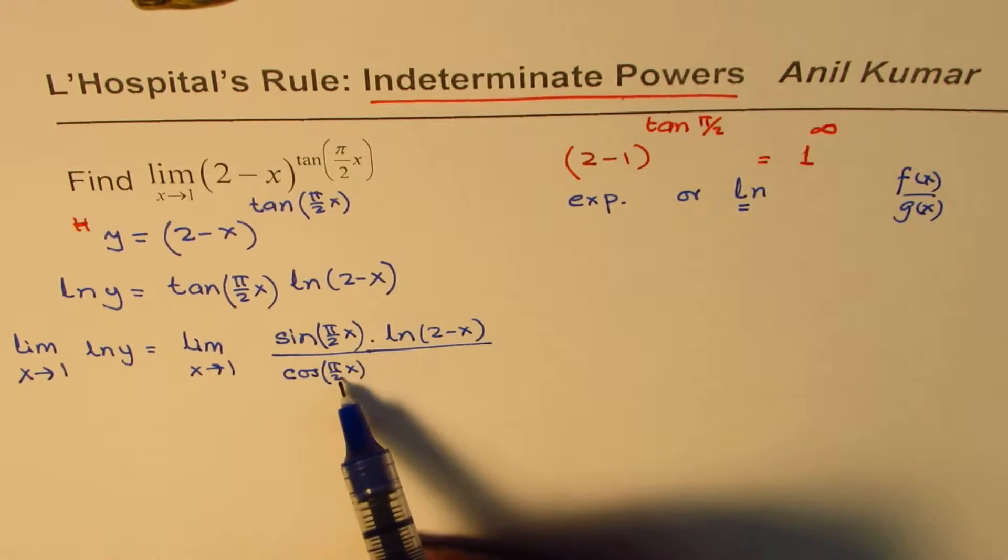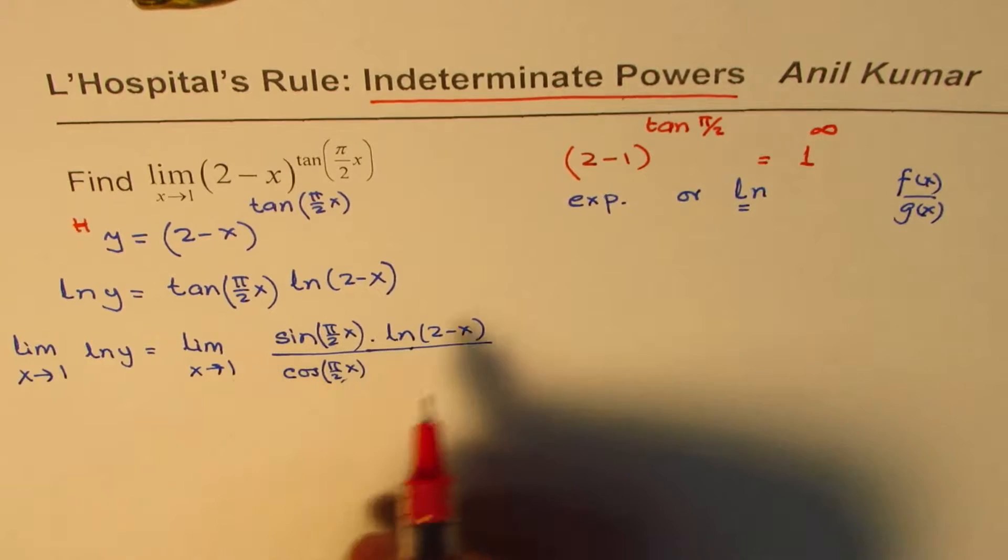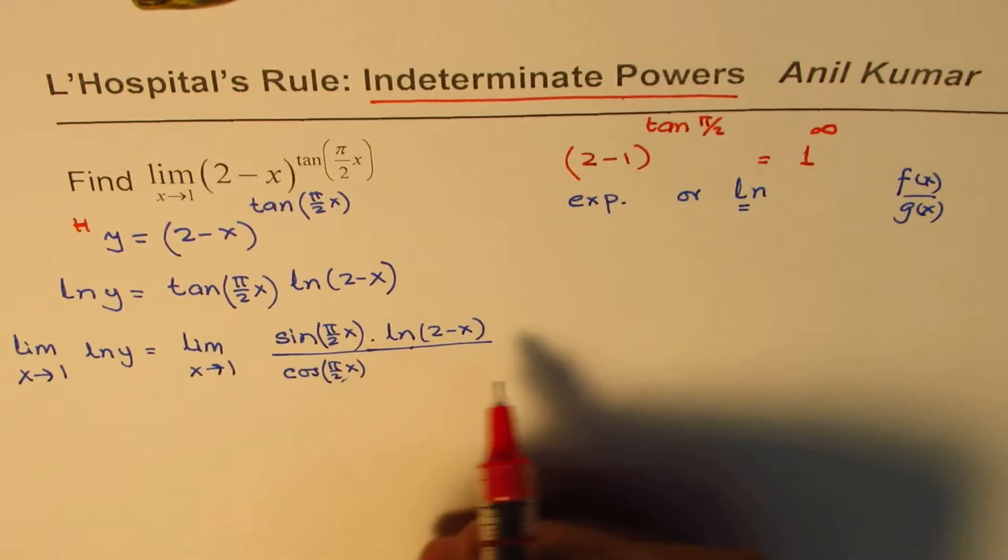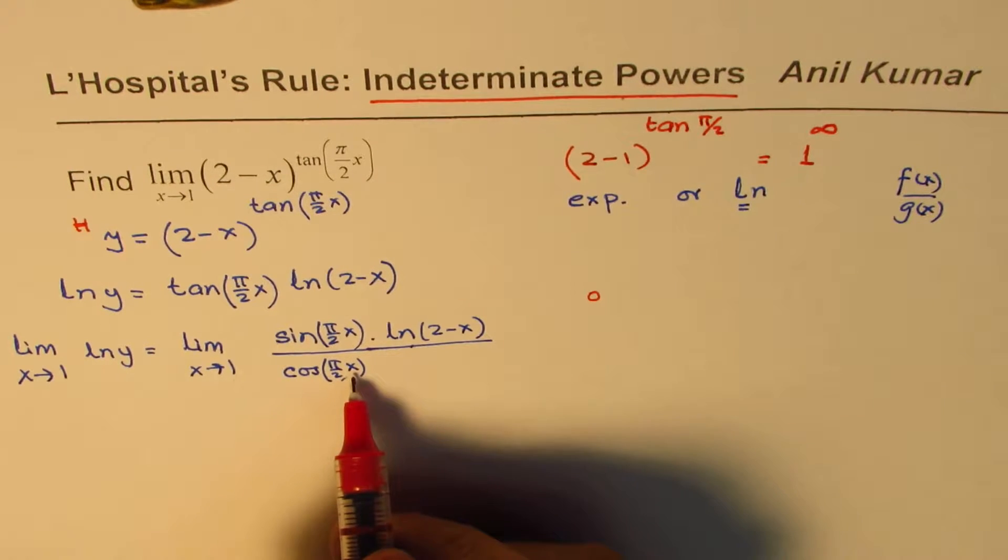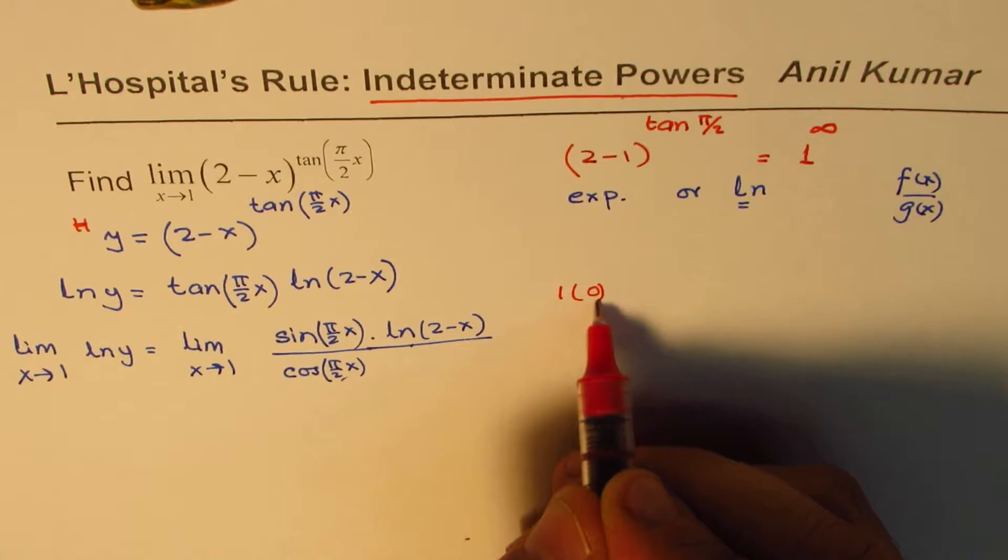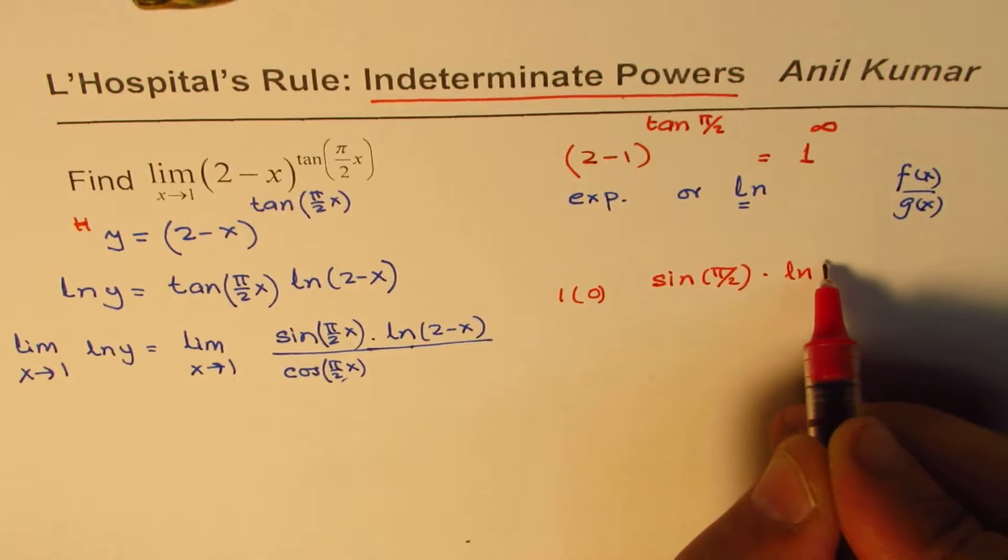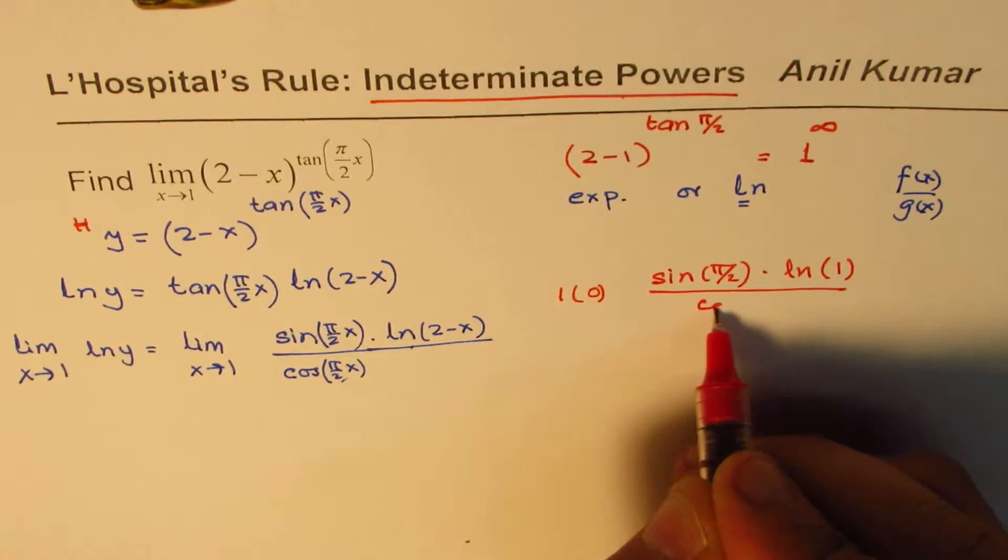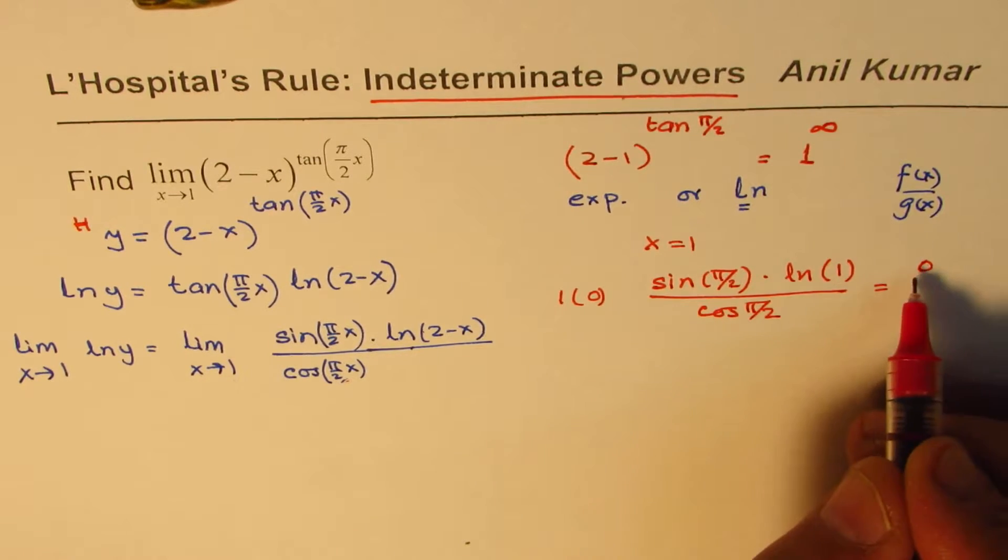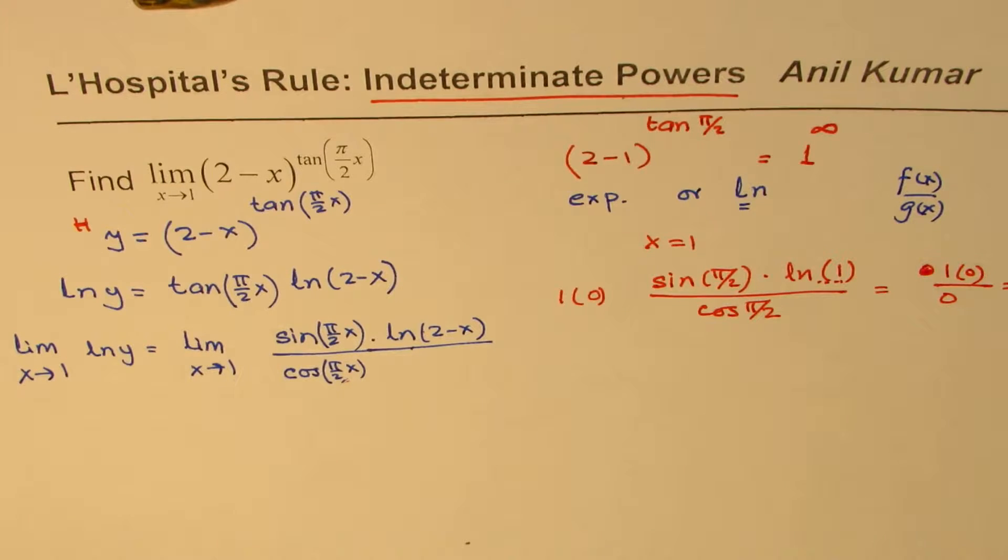Now before applying the rule, we should check: do we have indeterminate form? If I substitute 1 here for x, what do I get? 2 minus 1 is 1, ln(1) is 0. Sin(π/2) is 1, so 1 times 0 in the numerator. Cos(π/2) - let's rewrite. So we have sin(π/2) times ln(2-1) which is 1, divided by cos(π/2). So we have just substituted x equals 1. The numerator is 0, 1 times 0, over 0. So we have 0 over 0. So we can apply the rule.